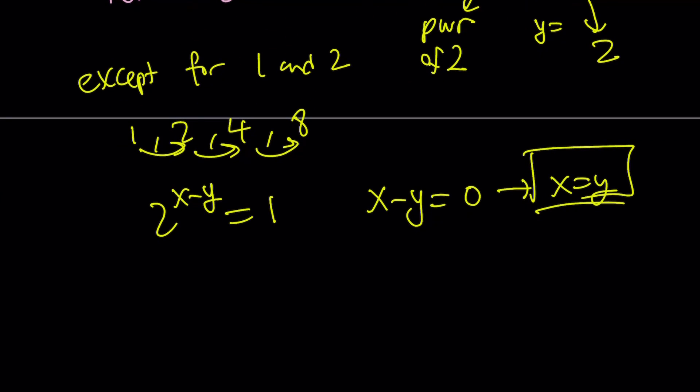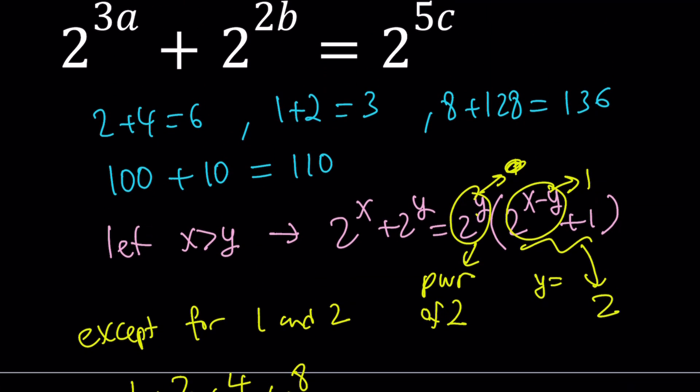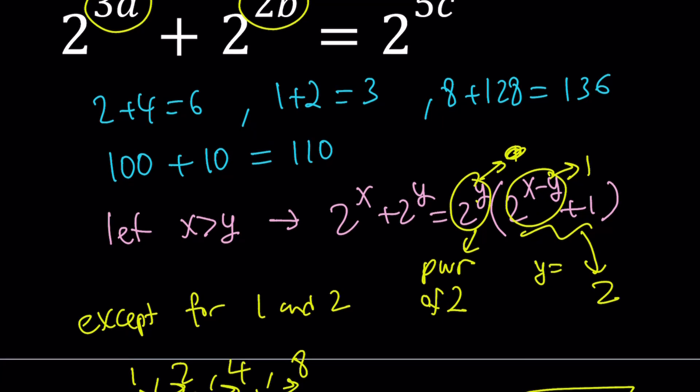So this means 2 to the power of x plus 2 to the power of x equals 2 times 2 to the power of x, which can be written as 2 to the power of x plus 1. Wow, this makes sense, doesn't it? Because 2 to the power of x plus 1 is a power of 2. So the idea is then these exponents have to be equal. Otherwise, you don't get a power of 2.